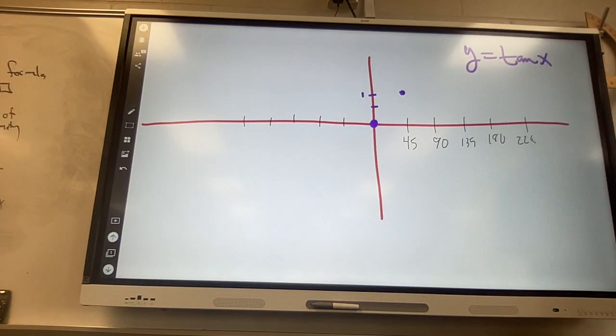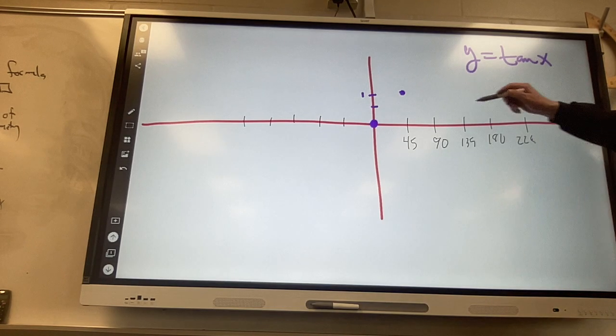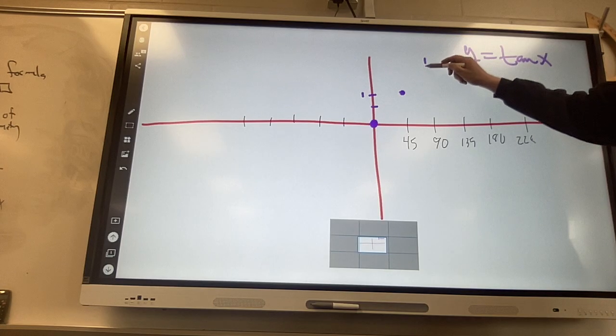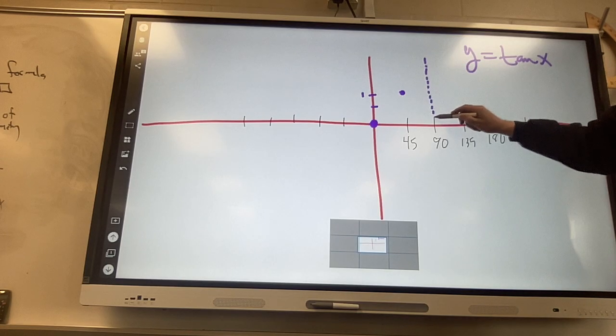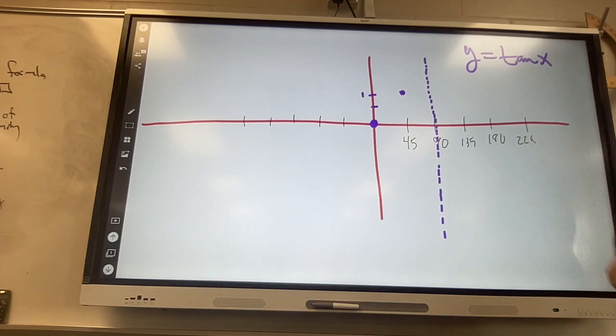At 90 degrees, tangent is undefined. When it's undefined there is no graph. At 90 degrees, draw a nice little dotted line going right down at 90 degrees.